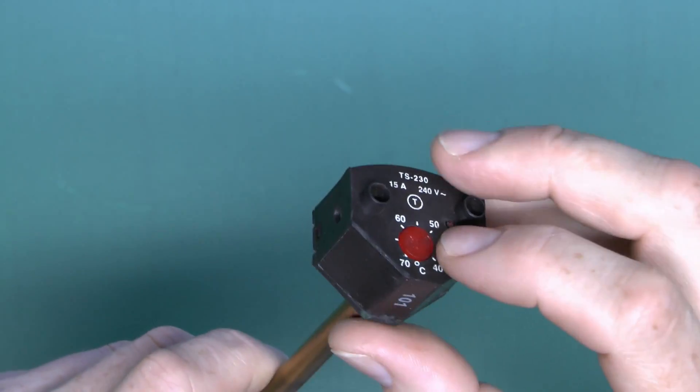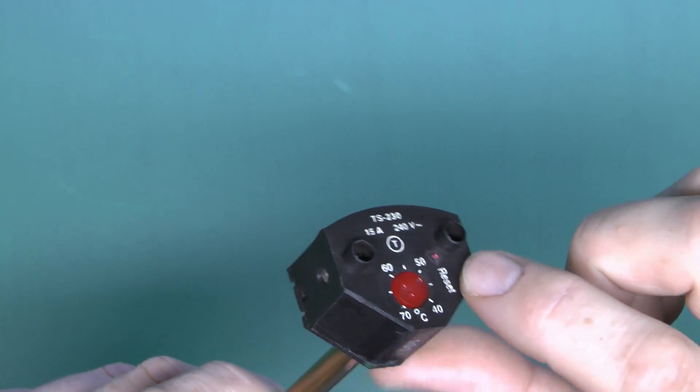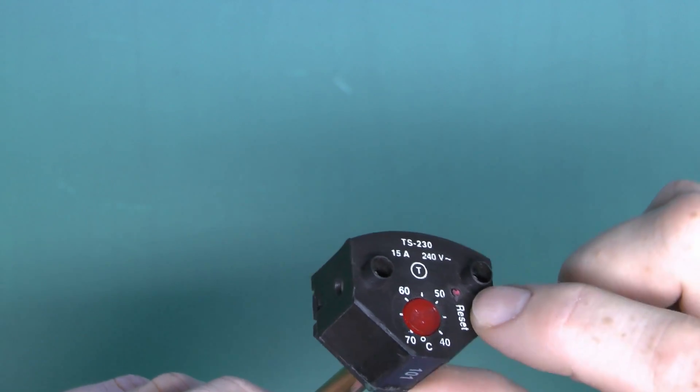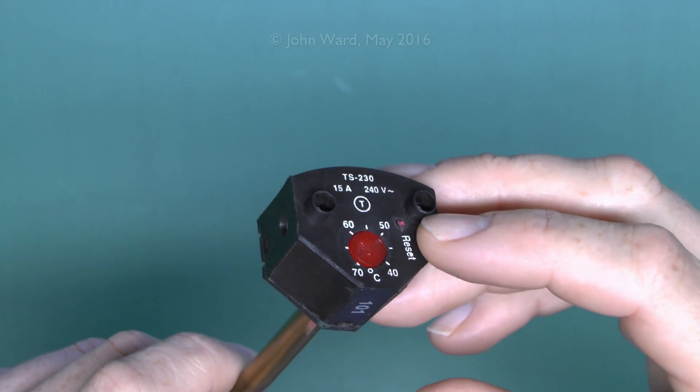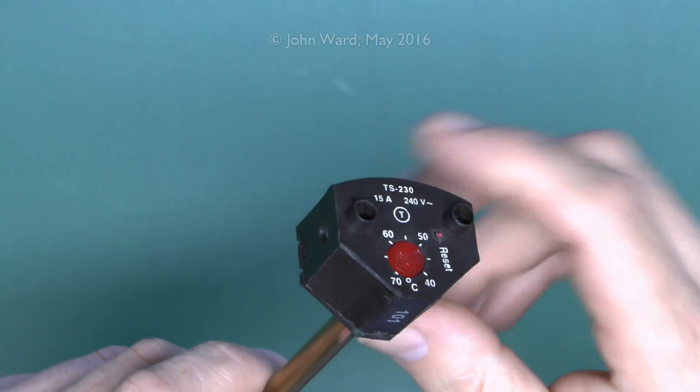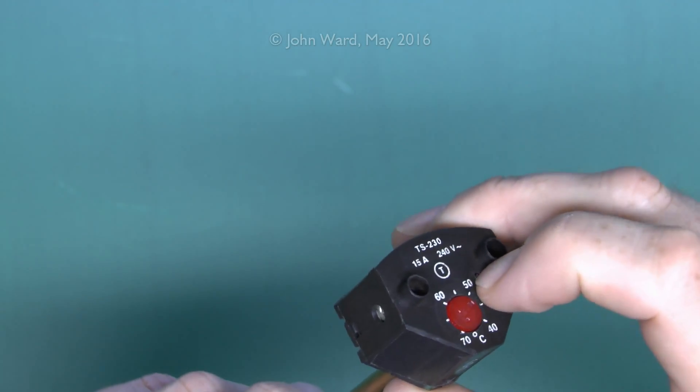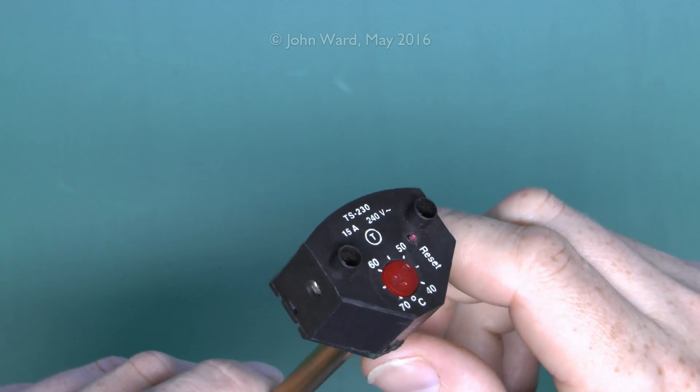And then what happens on the top is that this has a separate overheat cutout in it with a little button there. That button will pop out and that will disconnect it. It then just sits there and doesn't work anymore until you press the reset button, as the main thermostat part has failed.